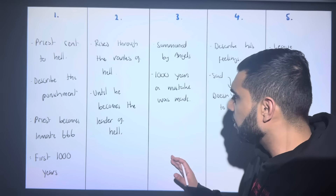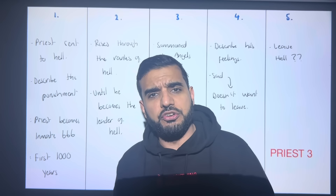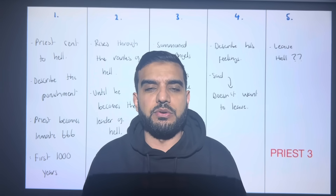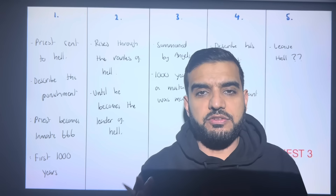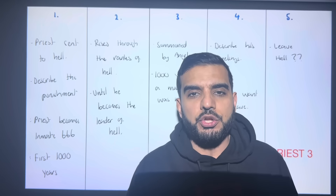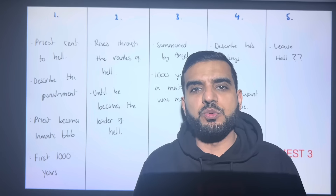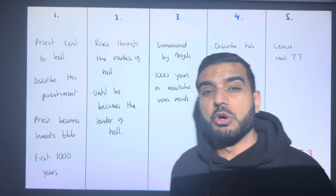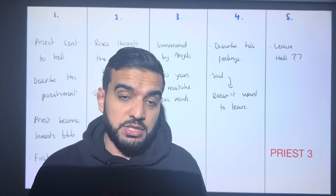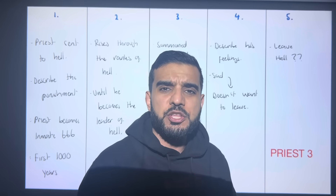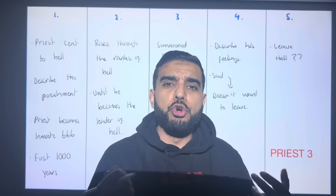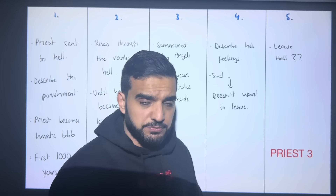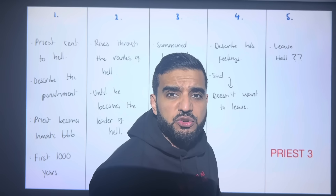In paragraph two, the priest settles into hell. On day one he's nervous and scared. He sees the murderers and the politicians — all the bad people gathered in hellfire. But the priest rises through the ranks. He takes off his collar, puts away the bible, smokes a cigar, embraces hellfire — he becomes a top dog in hell. In paragraph three, just as life is going well, he's summoned by the angels who tell him that a thousand years ago a fatal mistake was made — he was not supposed to go to hell.